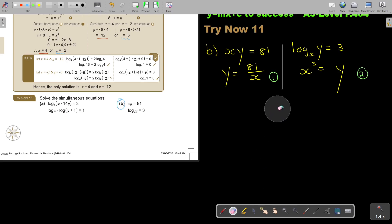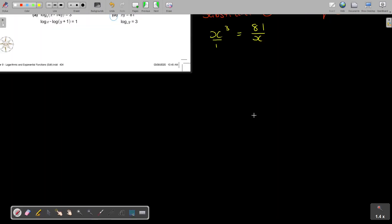Then we say, substitute equation 1 into equation 2. But I'm going to now take 1 and I put it in there. So I'm going to get x³ and that is going to give me 81 over x. So what do we do now? We cross multiply. So this will be x to the power of 4 is equal to 81.